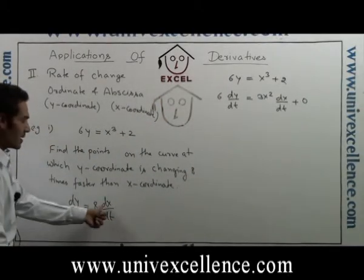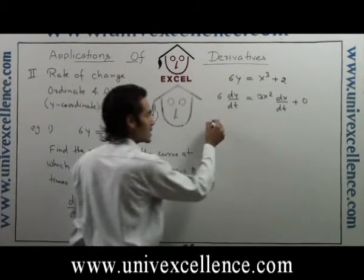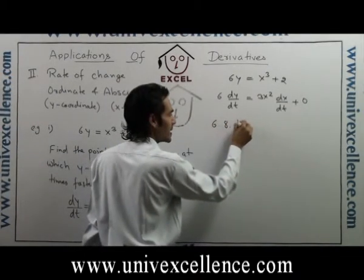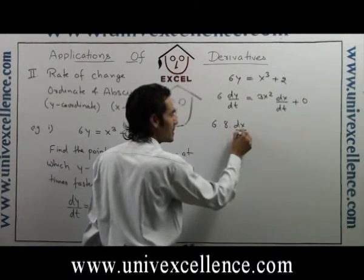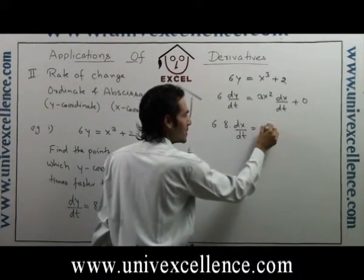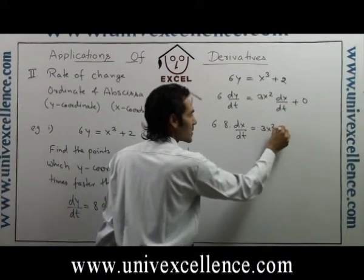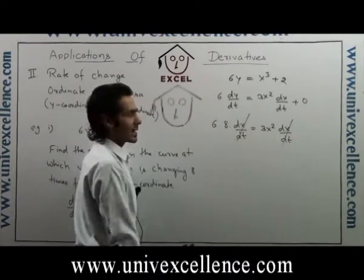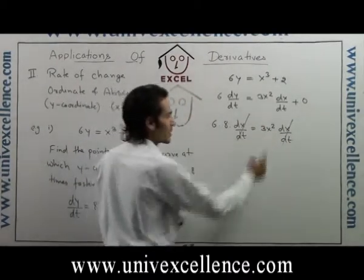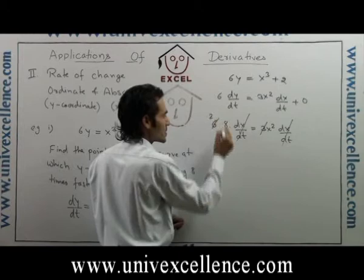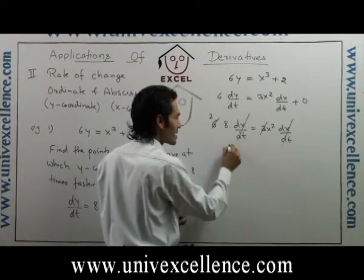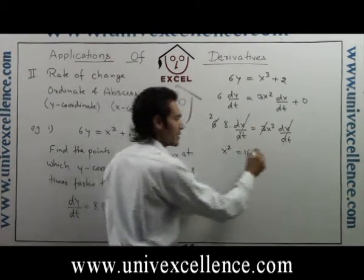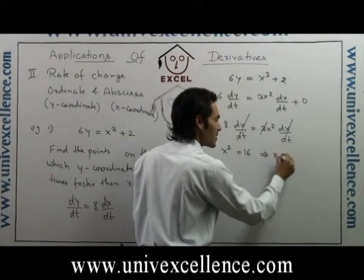Substituting dy/dt = 8·dx/dt: 6 × 8 × dx/dt = 3x²·dx/dt. The dx/dt terms cancel out, giving x² = 16, which implies x = ±4.